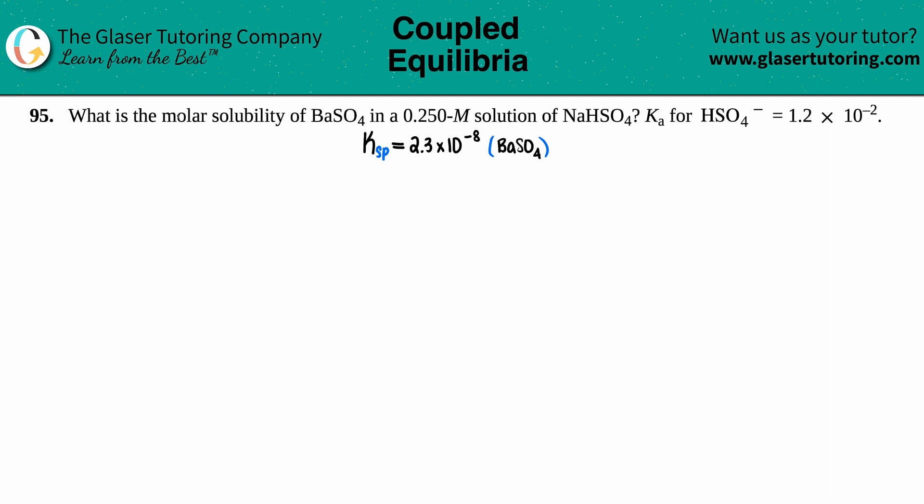Number 95, what is the molar solubility of BaSO4 in a 0.250 molar solution of NaHSO4? And then they tell us that the Ka for HSO4 is 1.2 times 10 to the negative second.